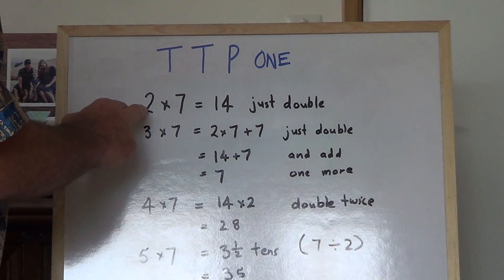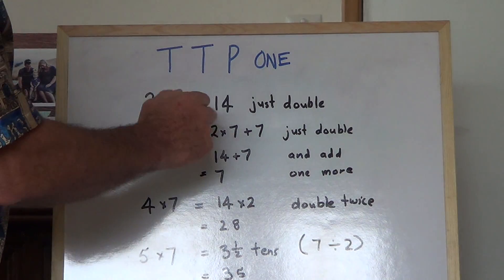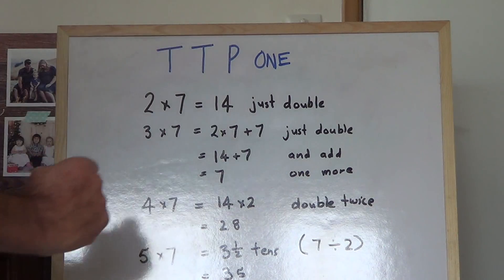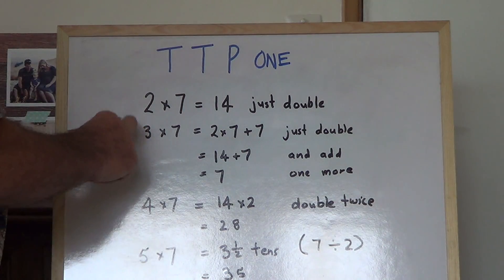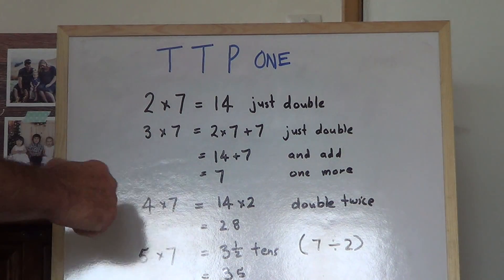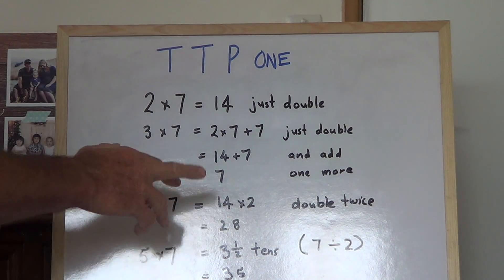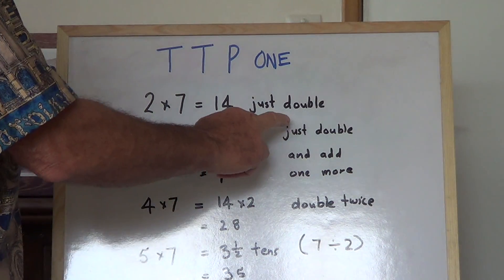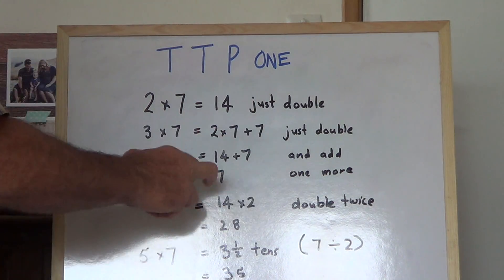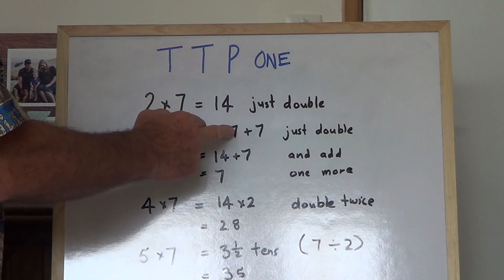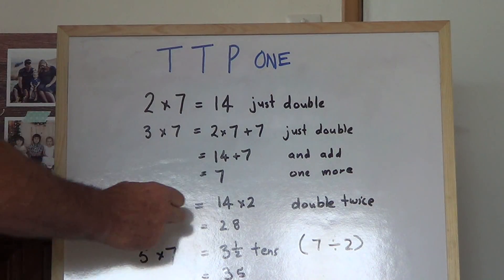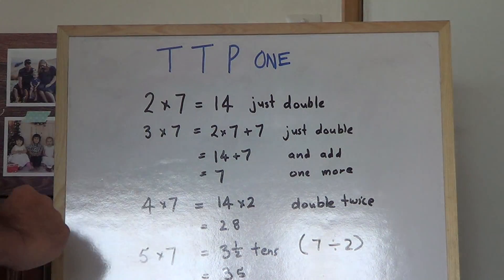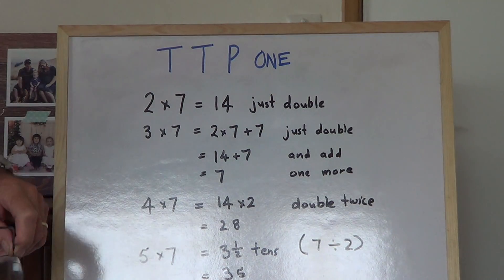If you go 2x7, you just double 7 and you get 14. If you go 3x7, for the 3x table, you just double and add one more. So you double 7, you get 14, you add 1 to 14 and you get...